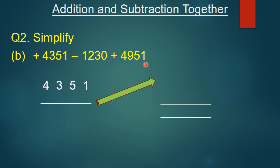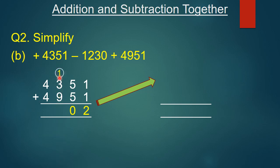We write 4351 on top and 4951 below it, then add. Ones place: 1 plus 1 is 2, write 2. Tens place: 5 plus 5 is 10, write 0, carry 1. Hundreds place: 3 plus 9 is 12, plus carry 1 is 13, write 3 and carry 1. Thousands place: 4 plus 4 is 8, plus carry 1 is 9, write 9. Result is 9302.